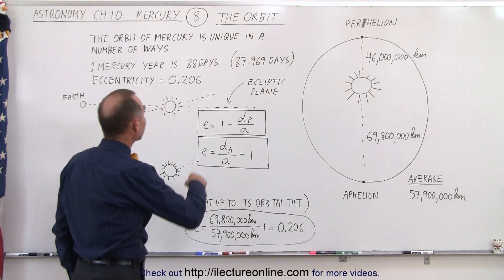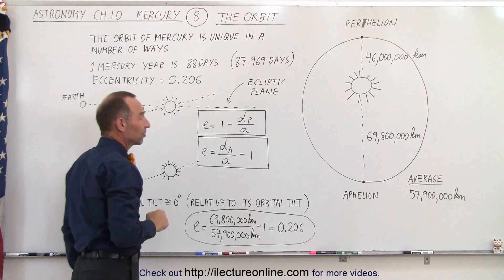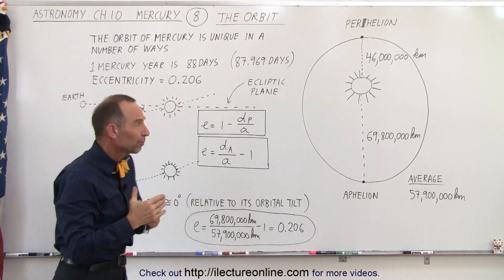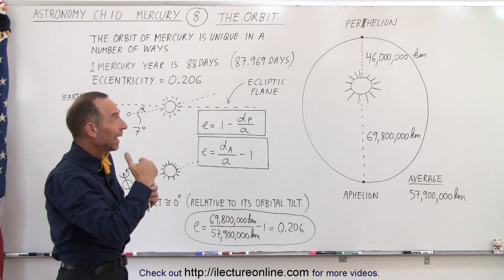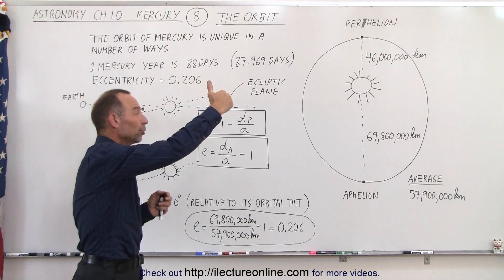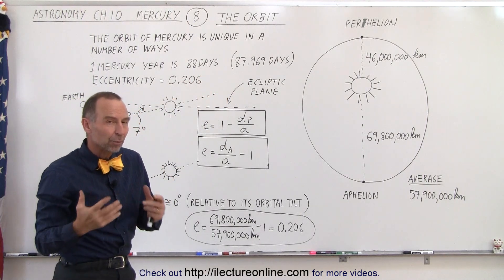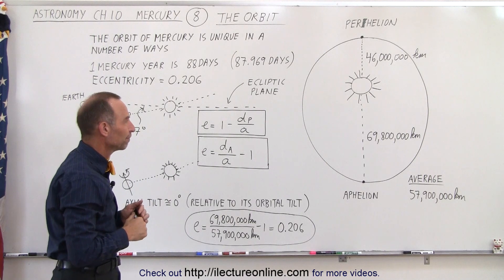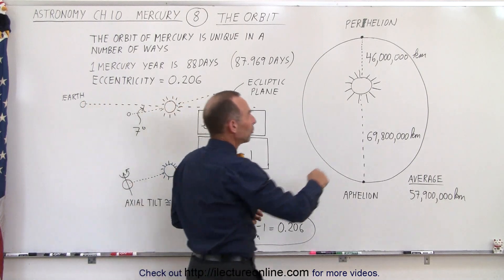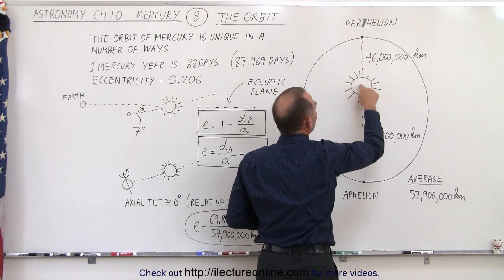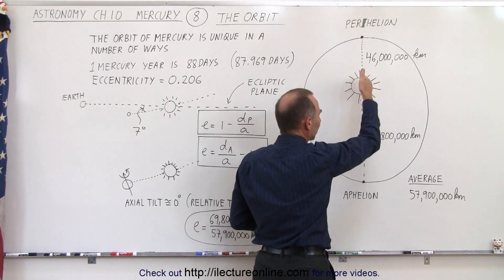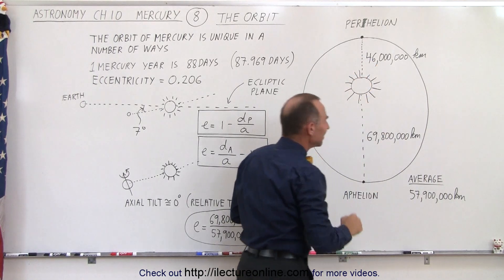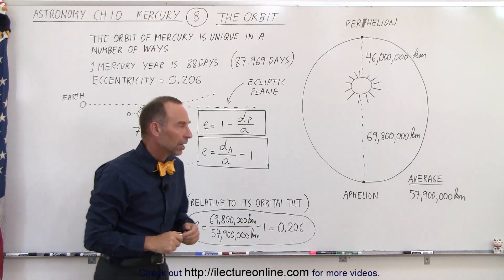Notice the eccentricity is 0.206. That means the difference between the average distance to the Sun and the distance when it's at perihelion or aphelion is as much as 20.6%. So notice that at the closest approach, Mercury is only 46 million kilometers away from the Sun, and at the farthest distance, it's at 69.8 million kilometers.